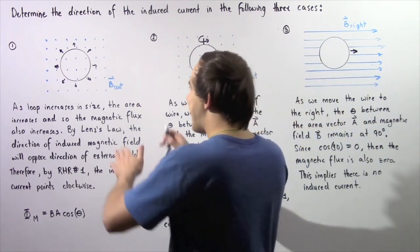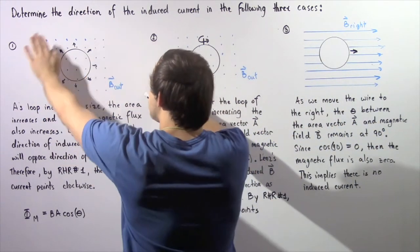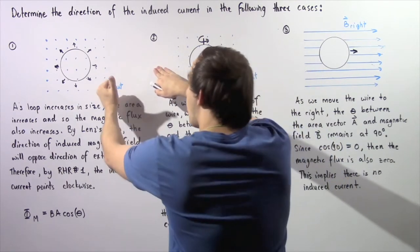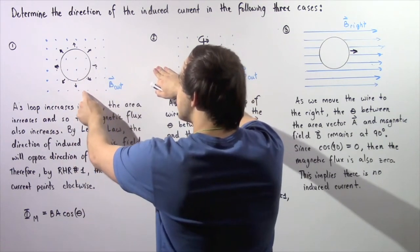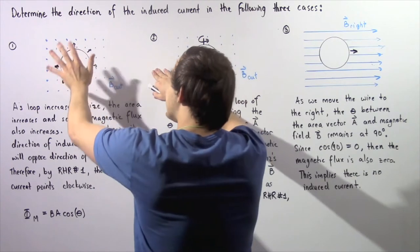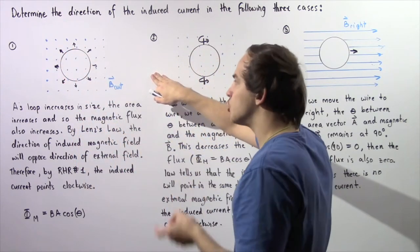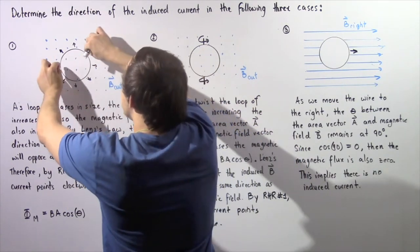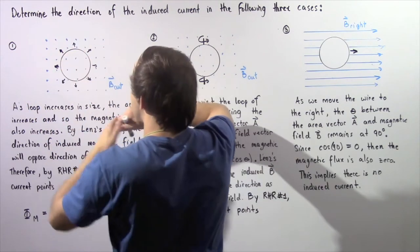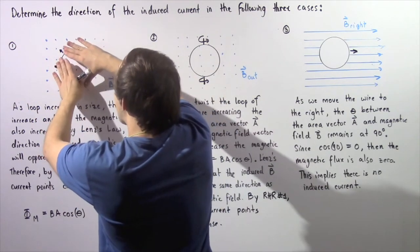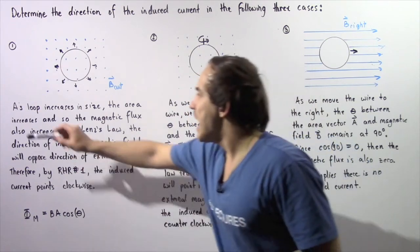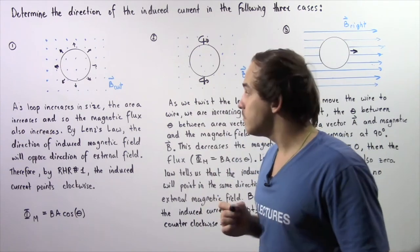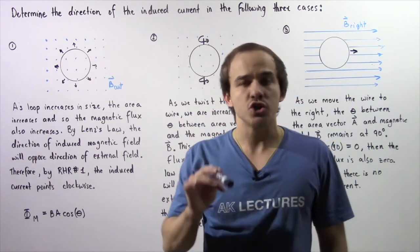In case number one, we essentially have a region of space with a uniform external magnetic field B that points out of the board, symbolized by these blue dots. Inside this magnetic field, we have a circular loop of wire. Let's suppose we begin pulling it in all possible directions so that our area begins to increase. As the loop increases in size, the area of the loop increases, and that implies that the magnetic flux will also increase.